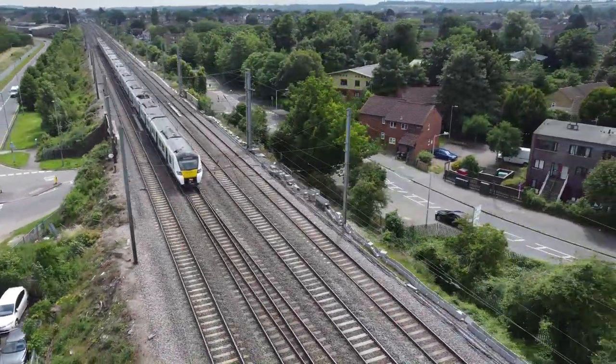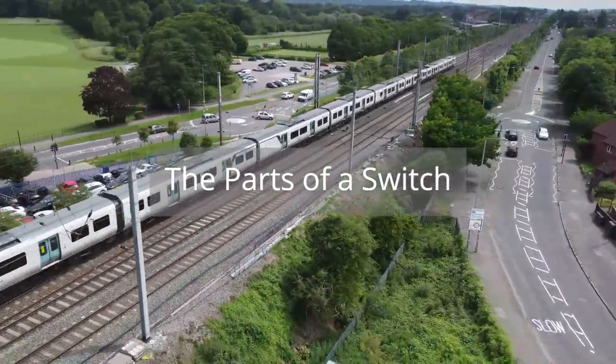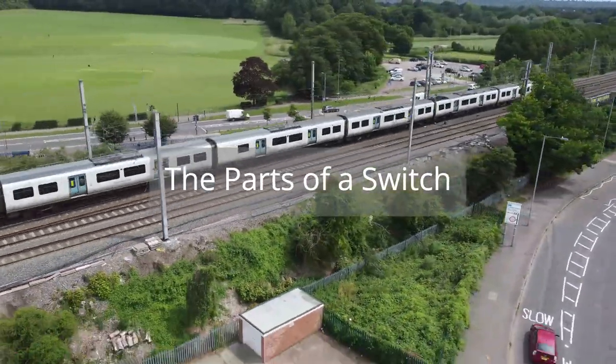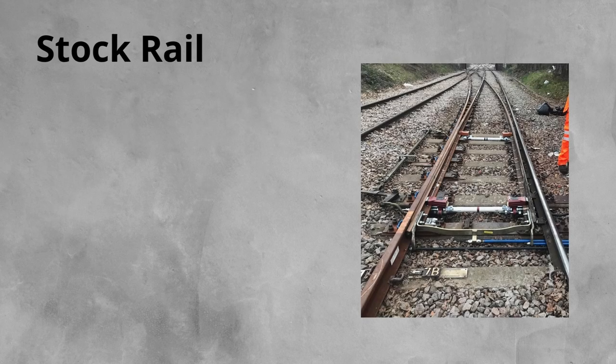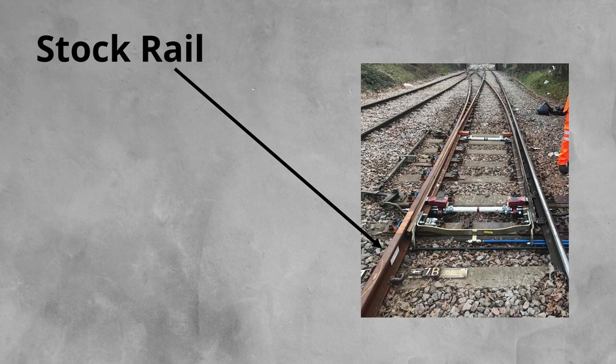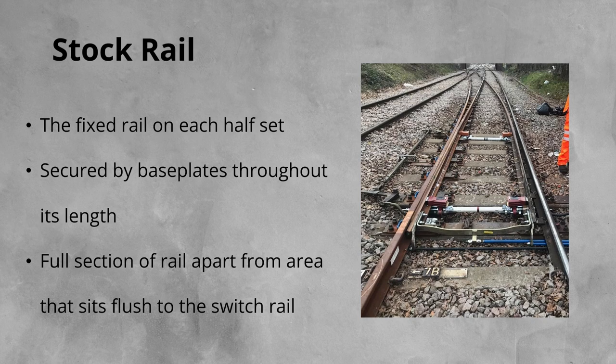Switches have a number of parts to them, which each have a name and a function. Let's take a tour of a switch, the different parts and what they do. Firstly, the stock rail. The stock rail refers to the fixed rail on each half set. It is welded into the track at either end and is secured by base plates through the switch's length. It is a full section of rail, apart from through the area where the switch rail contacts, where some machining may have been done to ensure the switch can sit flush to the stock rail.